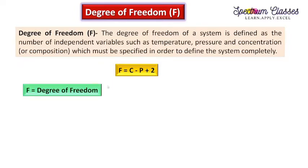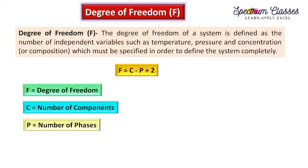Here F is the degree of freedom, C is the number of components, and P is the number of phases. About the number of phases and how we can determine them, and similarly what is called a component and how we can determine the number of components for a given system, we have already discussed in my previous videos. Here F is the degree of freedom and this formula is known as the Gibbs phase rule formula.